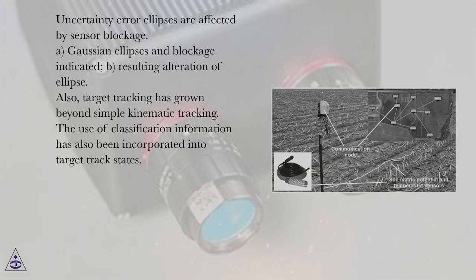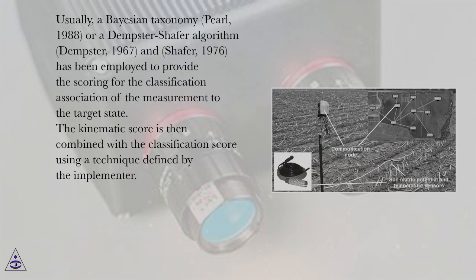Also, target tracking has grown beyond simple kinematic tracking. The use of classification information has also been incorporated into target track states. Usually, a Bayesian taxonomy (Pearl, 1988) or a Dempster-Shafer algorithm (Dempster, 1967, and Shafer, 1976) has been employed to provide the scoring for the classification association of the measurement to the target state. The kinematic score is then combined with the classification score using a technique defined by the implementer.